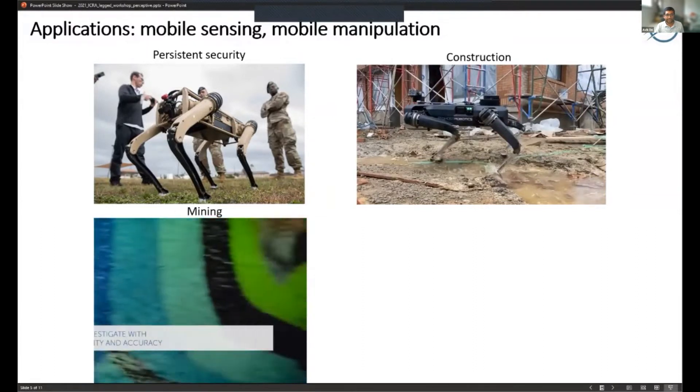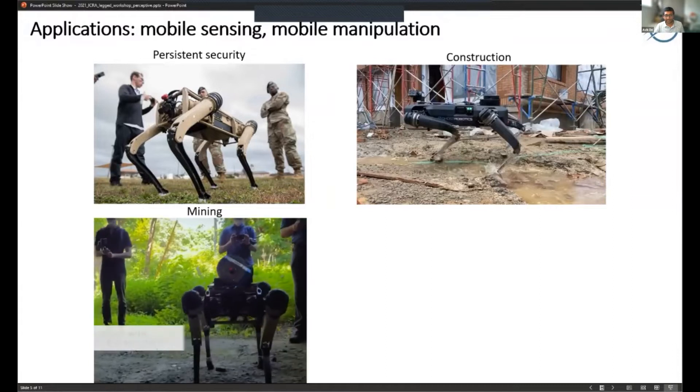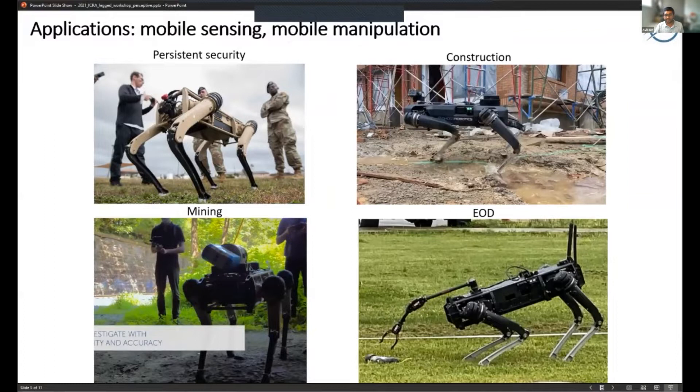All of these environments can have rough terrain, which makes legged robots an attractive proposition. We're also looking at EOD applications where we might have to add some manipulation mobile manipulation abilities on top of just mobile sensing. Those are the top applications we have in mind at the moment.